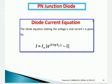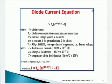The diode equation is: I = I₀ · e^(V / (η · VT)) − 1. Here, I is the diode current, I₀ is the diode reverse saturation current at room temperature, V is the external voltage applied to the diode, and η is a constant which is 1 for germanium and 2 for silicon depending on the semiconductor. VT is equal to kT divided by q, which is the thermal voltage.